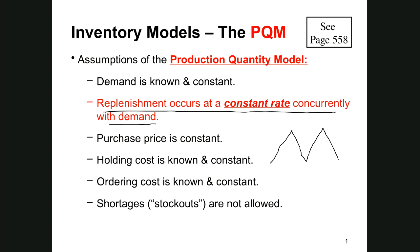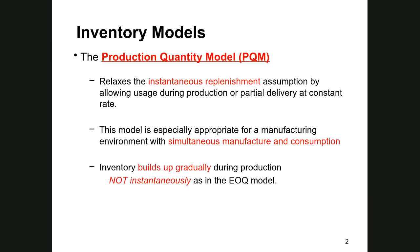Instead of sawtooth, this would be a shark's tooth model because these repeating cycles look like shark's teeth. Everything else remains the same as with the economic order quantity, except for the fact that we are in the business of producing and selling those same items. There's no instantaneous replenishment and we're in the situation where we're simultaneously manufacturing and consuming, and our inventory builds up gradually.